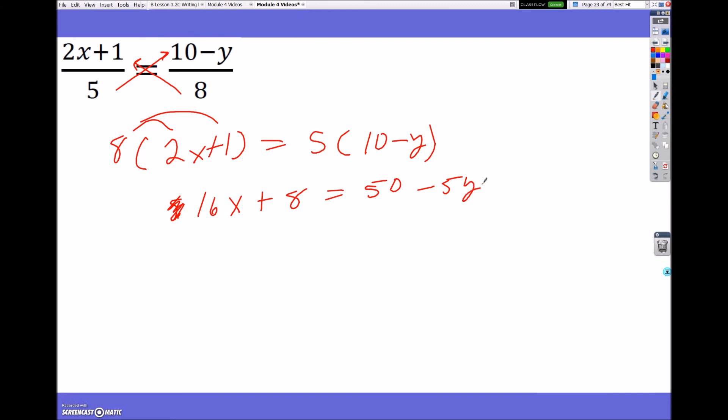All right. So, now the next step is I want to get y all by itself. So, I'm going to minus 50 on both sides. This will give me... I'm going to rewrite it. It's just a little easier for me to write it in slope-intercept form. So, I'm going to have negative 5y equals 16x minus 42. And my last step is just to divide each and every term by negative 5. And this would give you a final answer of y equals negative 16/5 x plus 42/5.